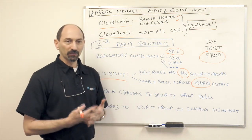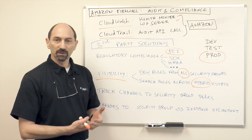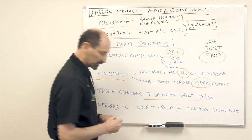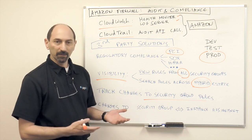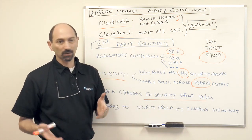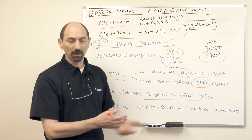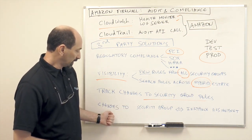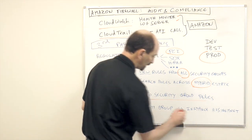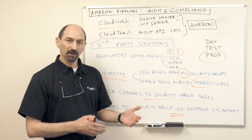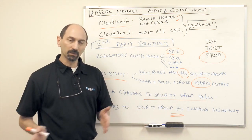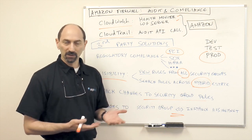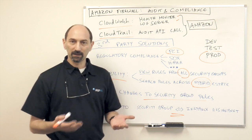Another thing that is part of every type of regulation is tracking changes to the security policies. In the Amazon environment, you need to be able to track changes to the security group rules. If somebody makes a change to a particular rule, that can have an impact on your regulatory compliance, because that rule is associated with various instances that might be part of the audit estate. You also need alerting and monitoring for changes to the mapping between security groups and instances — if a security group that used to be associated with certain instances is no longer associated with those instances, the protection is changed, and this is an event that needs to be notified, audited, and tracked.